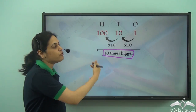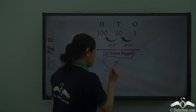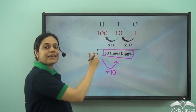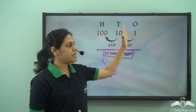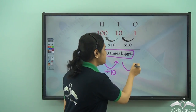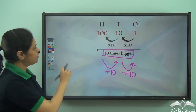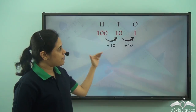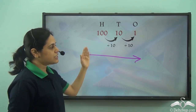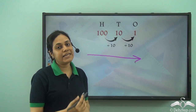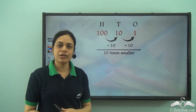Now what happens if I move to the right? If I divide by ten, I can come from the hundreds to the tens place. And once again, if I want to go from the tens place to the ones place, I need to divide by ten. So as I move towards the right, the digits become ten times smaller.